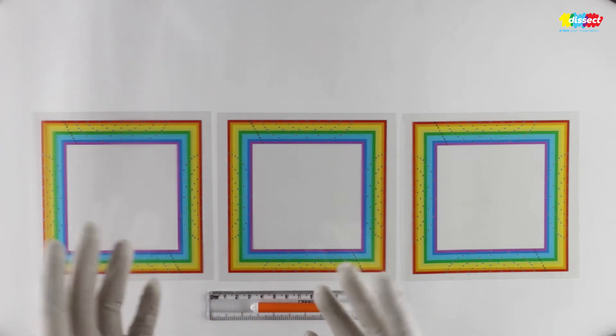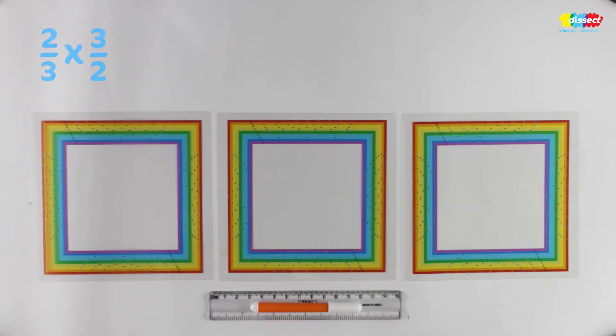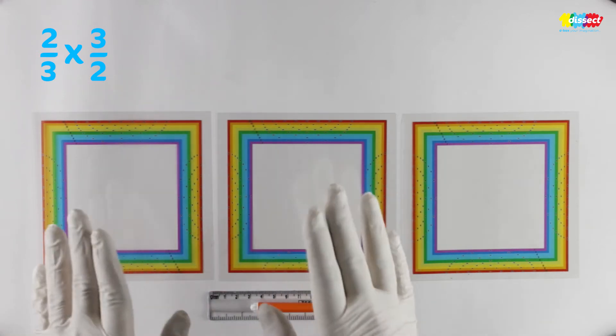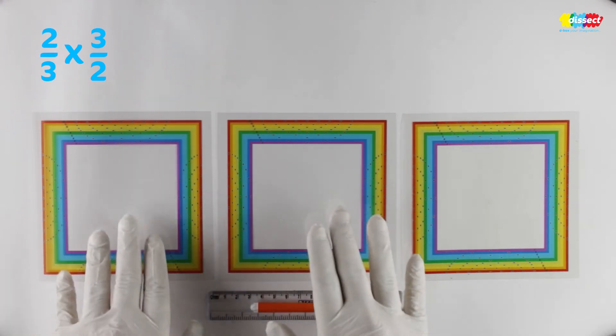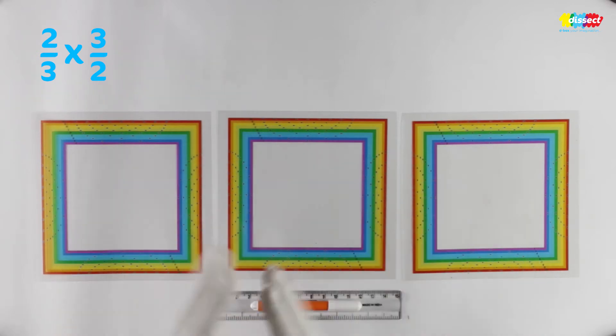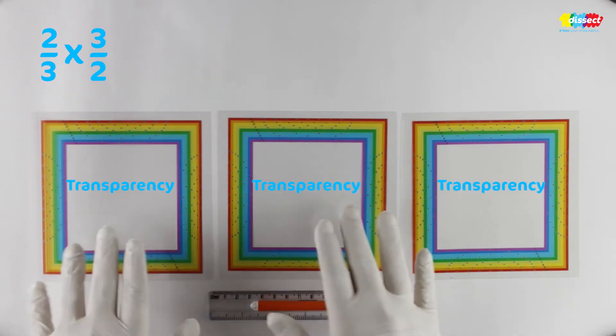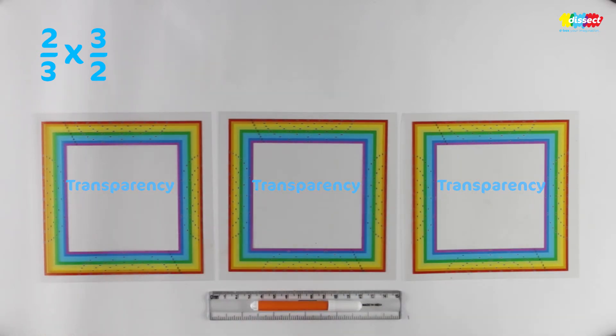So let's take an example of 2 by 3 into 3 by 2. Now to do this particular multiplication we will be using transparency sheets. These are fraction transparency sheets. We will be requiring three of them and we will be using a marker to draw upon the transparency sheet and a ruler to make the markings.